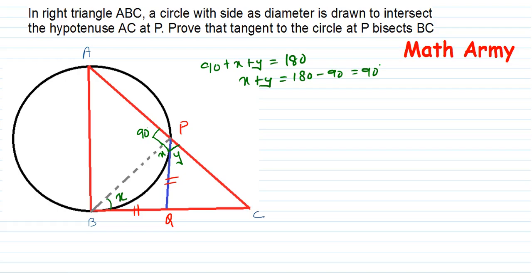Now, when BQ is equal to QP, automatically the angle at B will also be X, because it forms an isosceles triangle. At angle C, I have given another angle Z. Now, thinking about the bigger picture — triangle PBC — when we know that angle P equals 90 degrees, which means X plus Y equals 90 at the top, we are left with X and Z. So X plus Z also equals 90 degrees.